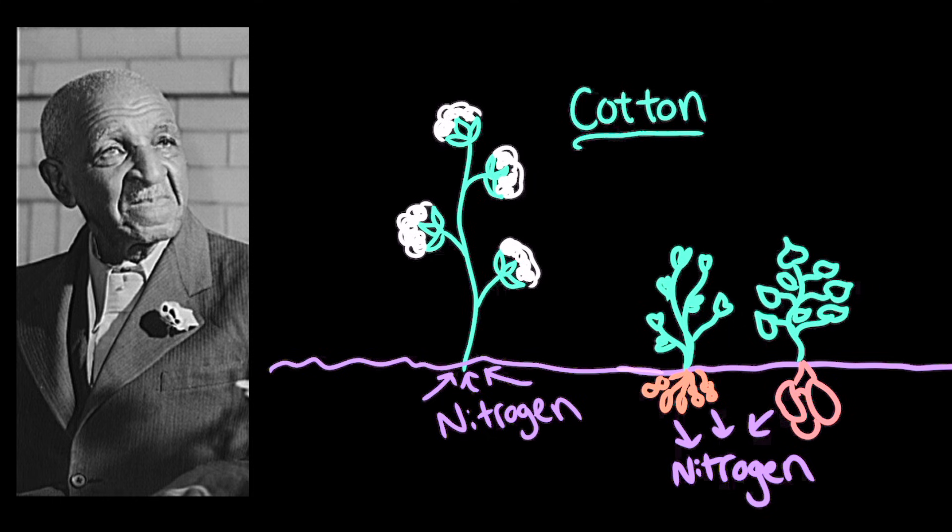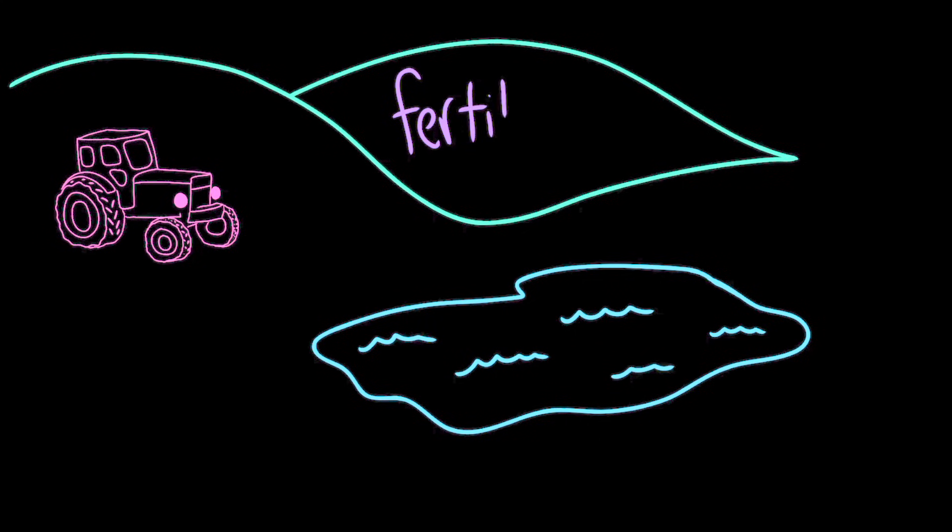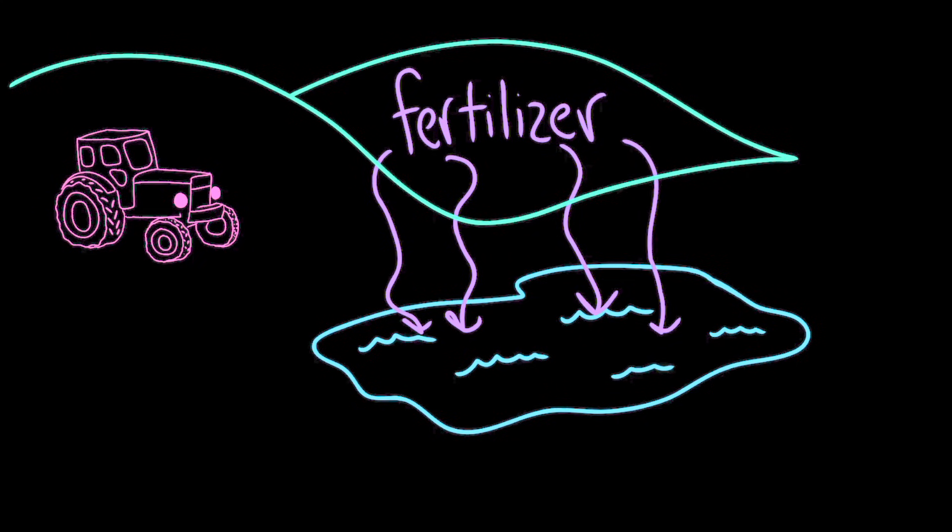Since then, we've discovered a way of putting nitrogen back into the soil using chemically synthesized fertilizers. But sustainability is more complicated than just replacing depleted resources. When farmers use too much fertilizer or use poor methods of fertilizer application, all that fertilizer can run off into neighboring waterways. This excess nitrogen in the water could cause a lot of algae to grow.